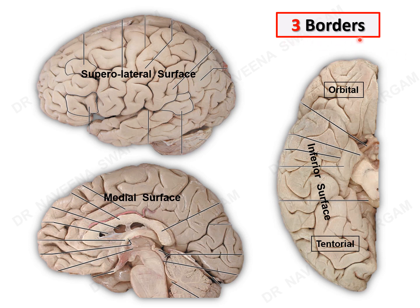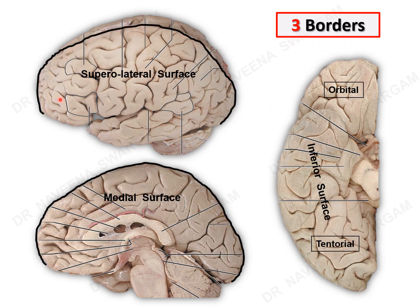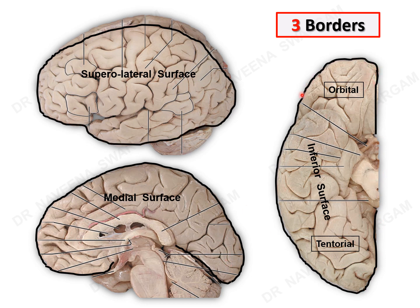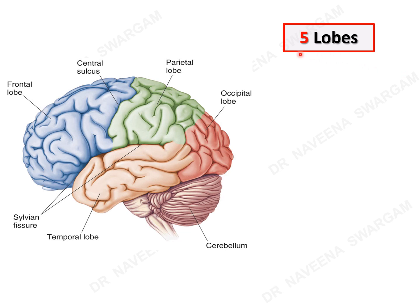The three borders are: the superior border, which separates the superolateral surface from the medial surface; the inferomedial border, which separates the inferior surface from the medial surface; and the inferolateral border. All three borders extend from the occipital to the frontal poles. A point to note is that the inferior border shows a slight concavity in front of the occipital pole known as the pre-occipital notch.